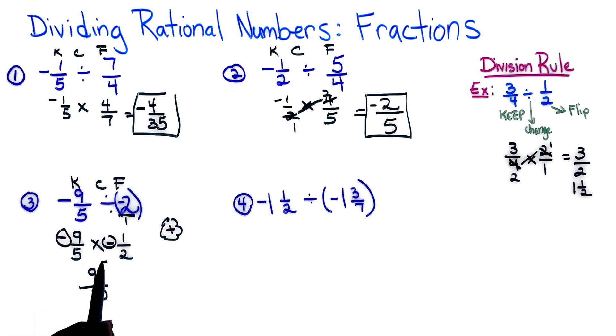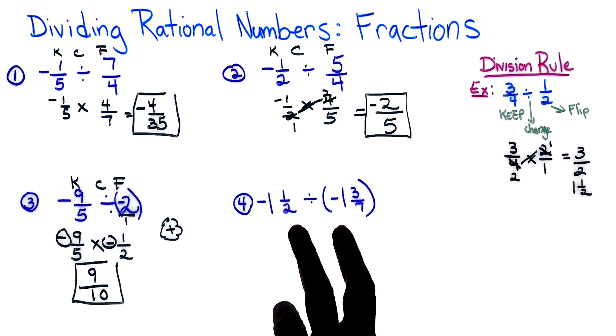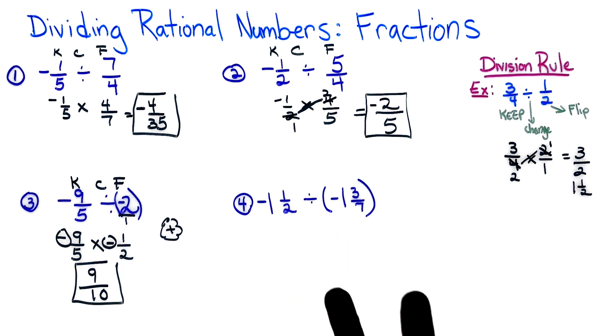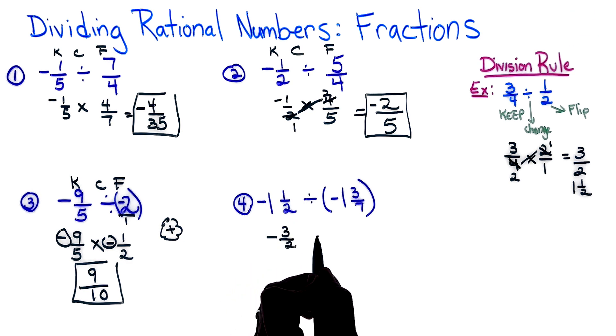And our last problem, I see that they are not in fraction form. We must have these in fraction form before we can even worry about keep, change, and flipping. So I'm writing a negative, and two times one is two plus one, so we have a negative 3/2. Notice I'm not doing anything yet. A division sign, and now this is negative so I'm putting my negative symbol there, and seven times one is seven plus three is 10/7.